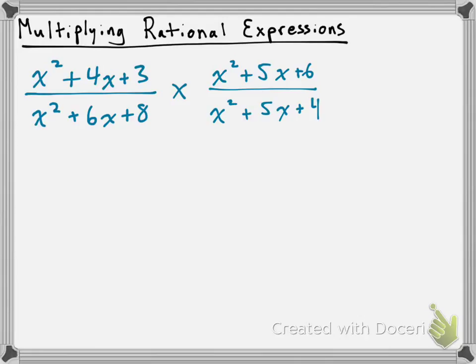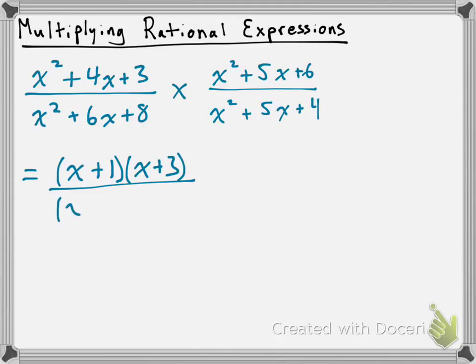The first step we're going to take here is we're going to have to factor everything — factor the numerators of both rational expressions, factor the denominators of both rational expressions. So I'm going to be factoring x squared plus 4x plus 3 first, and that's going to factor into x plus 1 times x plus 3. Then I factor the denominator: x squared plus 6x plus 8 is going to factor into x plus 2 times x plus 4.